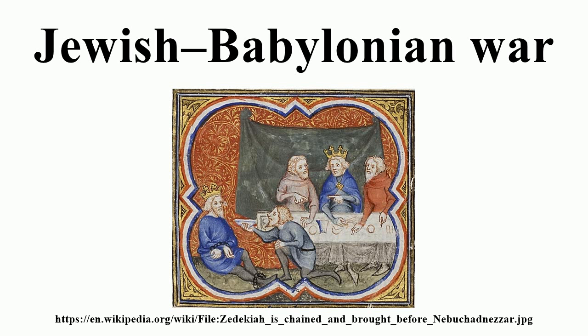First Siege of Jerusalem: Nebuchadnezzar besieged Jerusalem in 597 BC and managed to capture the city and King Jehoiakim, along with all of the aristocracy of Jerusalem. He also looted the treasures of the Temple, including the golden implements. Then Nebuchadnezzar exiled 10,000 officers, craftsmen, and 7,000 soldiers.